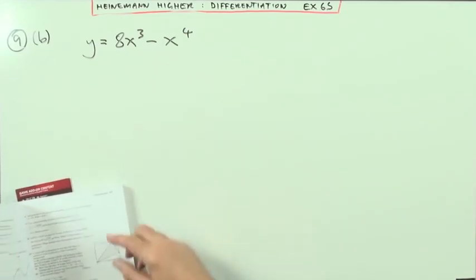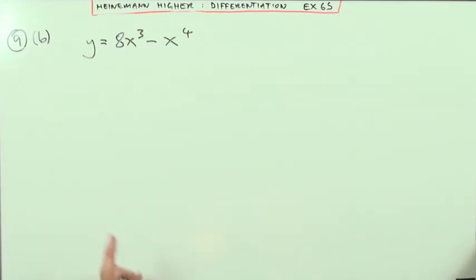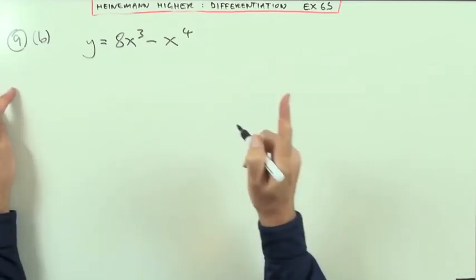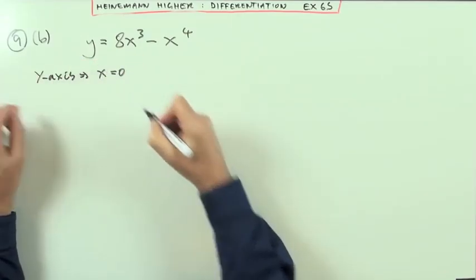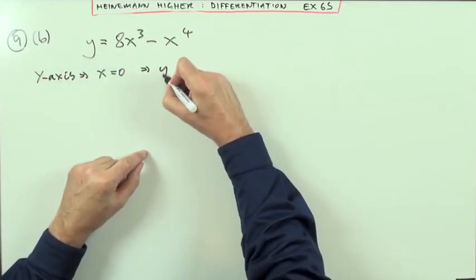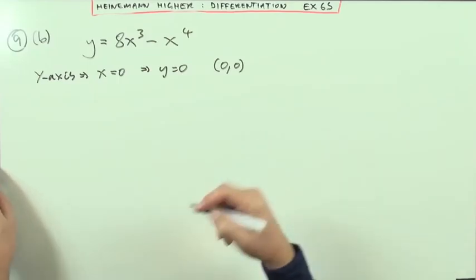So again, sketch the graph of this function, and you can see, just from the nature of those factorizations, this should turn out to be quite nice. Same steps. First of all, where does it cut the axis? Well, it will cut the y-axis when x is 0, which means y simply will be 0. So I've got that point straight away, cuts the y-axis at 0, so that's going through the origin.